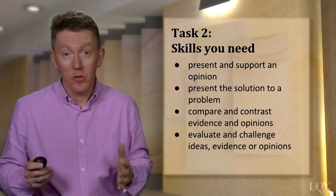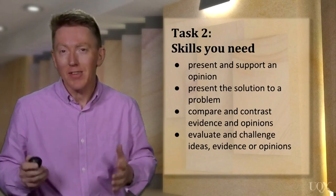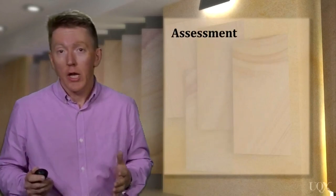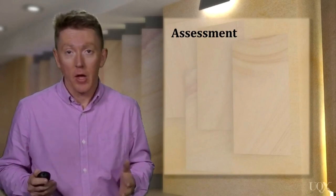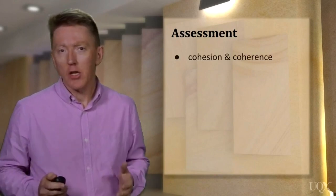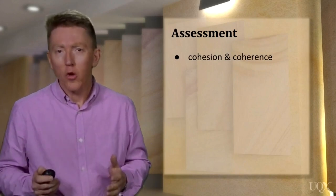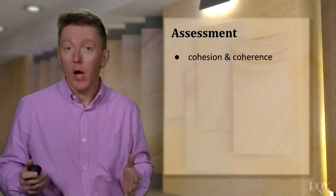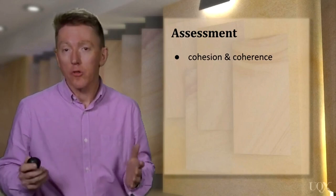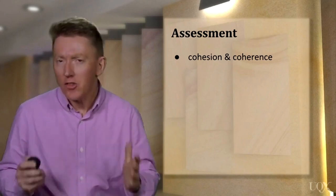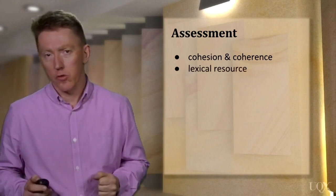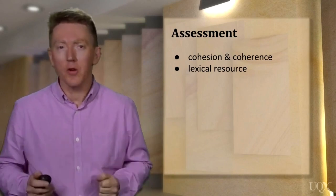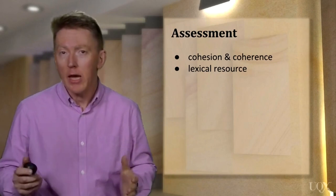Before we start to practise these skills, let's take a look at how you will be assessed in the IELTS Academic Writing Test. For both task 1 and task 2, you will be assessed in four main areas. The first one is cohesion and coherence — your ability to write a clear and organised answer that is easy for the reader to follow and understand, organising your response into paragraphs. The second area is lexical resource, or vocabulary.